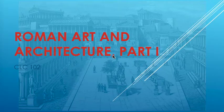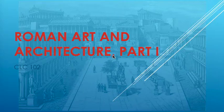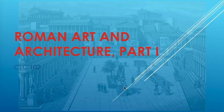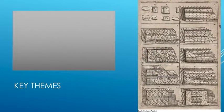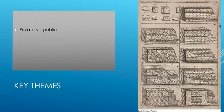In this module we're going to discuss Roman art and architecture, itself a very large topic. Thus this lecture will be divided into two portions: part one will address key themes in Roman architecture, and part two will discuss Roman art. Roman architecture is an enormous topic that represents a lot of themes. One key theme is the contrast between private and public architecture.